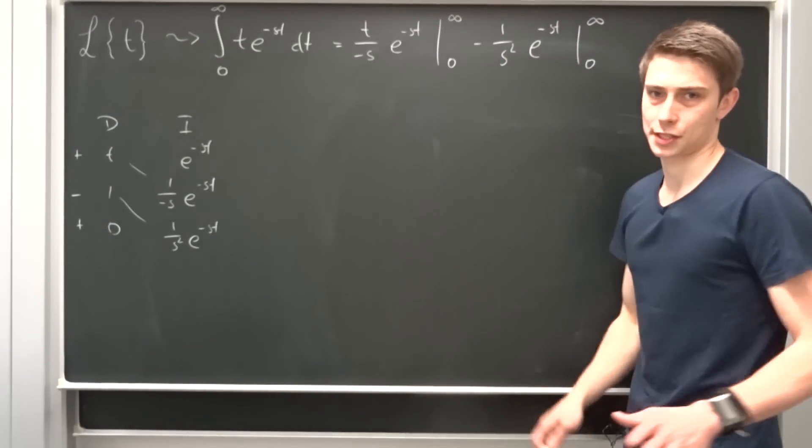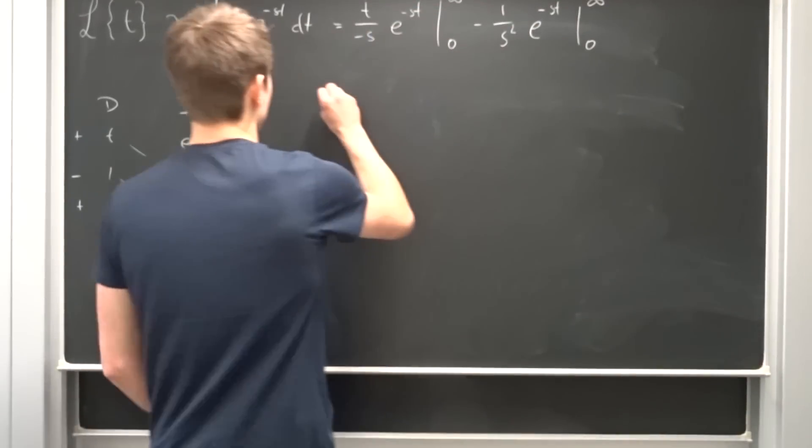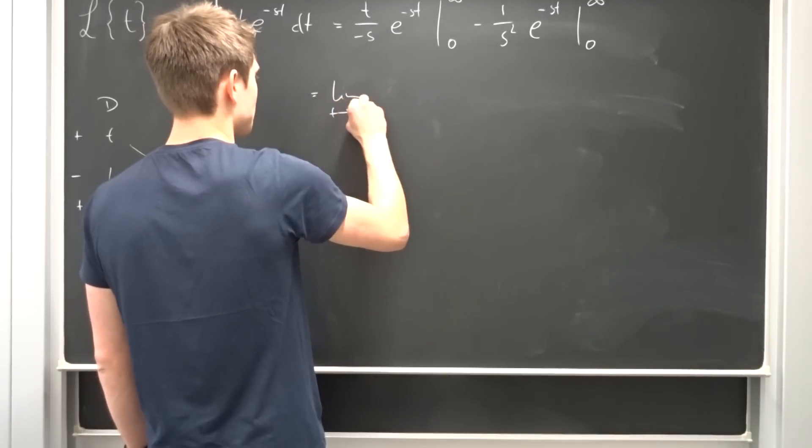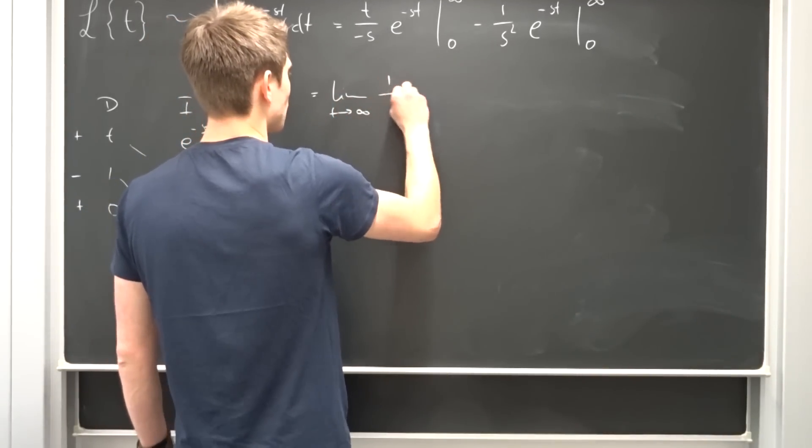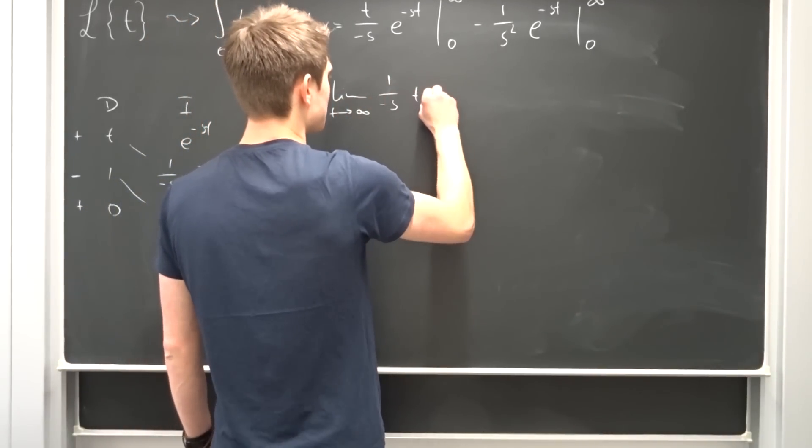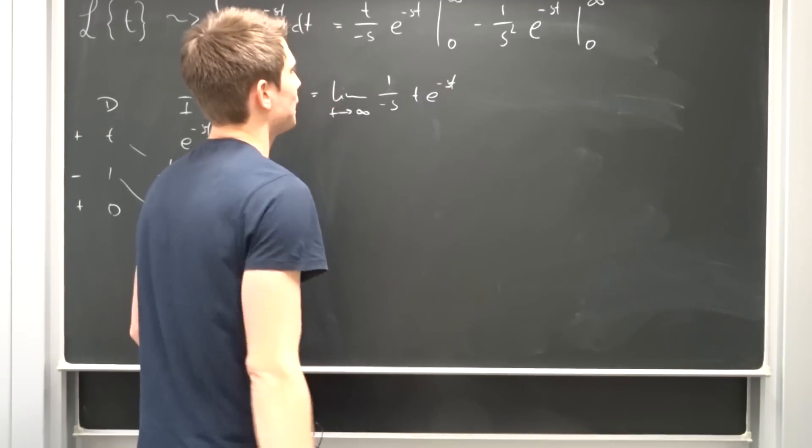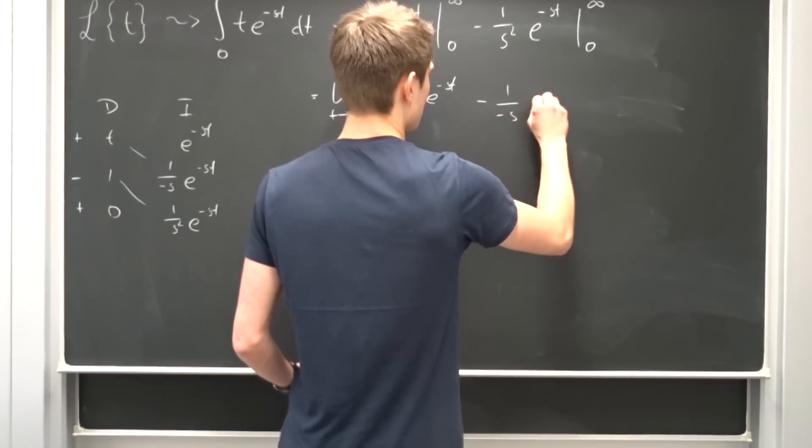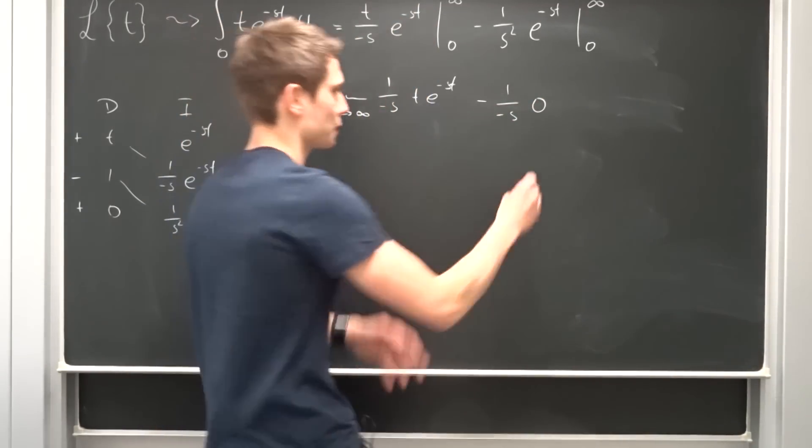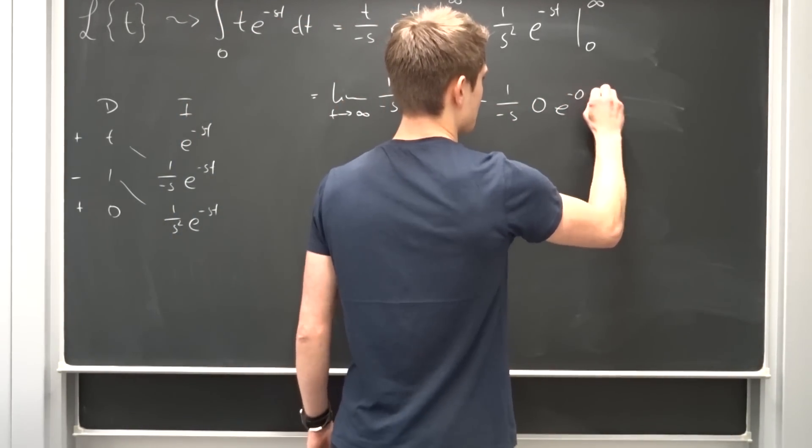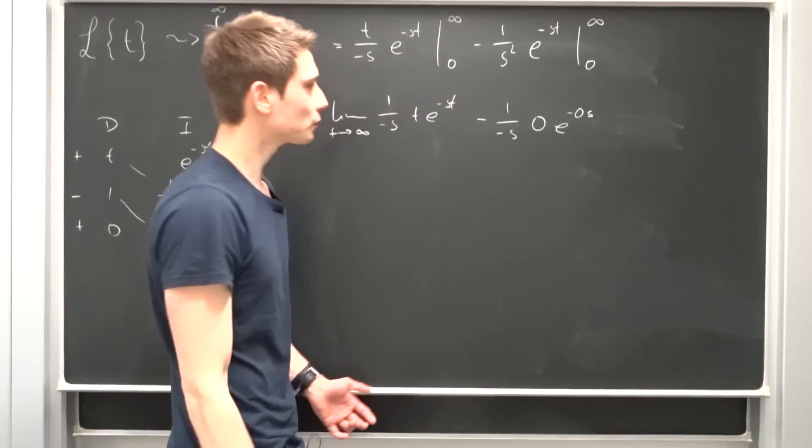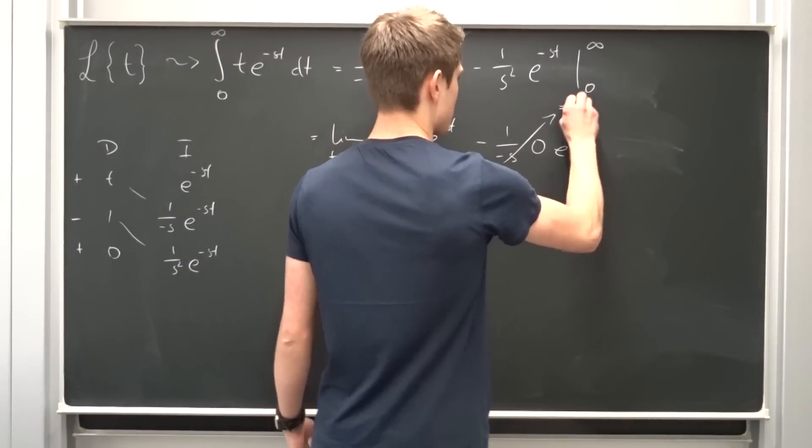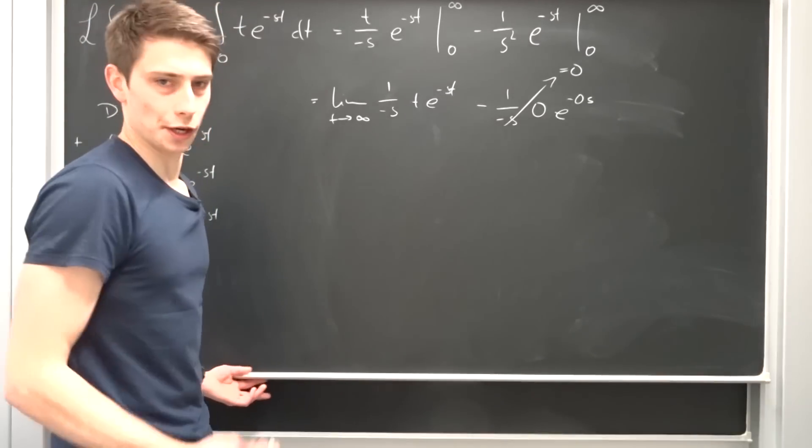And now we can just take the limits and see what we get. So at first this is the limit as t approaches infinity of t over minus s times e to the minus st. And then we get minus 1 over minus s times 0 basically and times e to the 0 times s. So this is just 0. So that was quite easy. Let's conclude that.